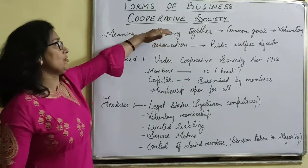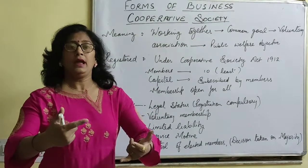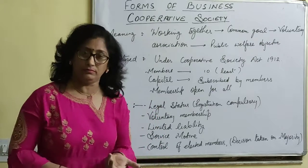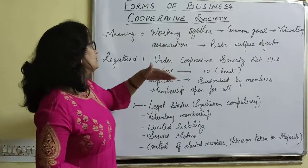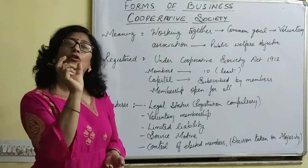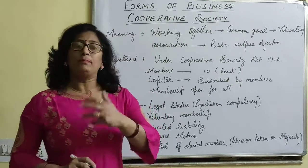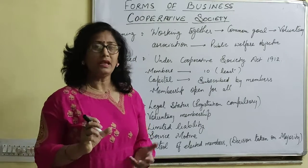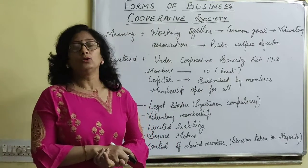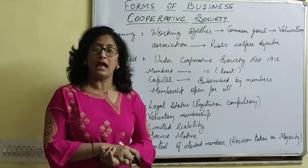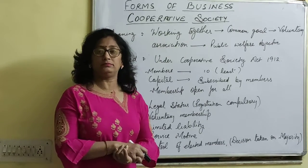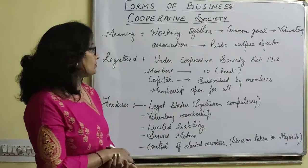In cooperative society, members come together with a common objective — to supply commodities to the public at less cost. The public gets quality products at a cheaper price. The government also supports it through registration because it helps the weaker sections of society, and registration is compulsory.